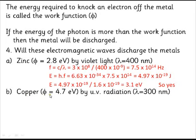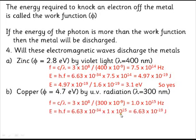If I then try copper with 4.7 electron volts with ultraviolet radiation at 300 nanometers, we could do the same calculation. And what you find is that you've got 4.1 electron volts. That's less than 4.7 electron volts. So no, it won't get discharged.